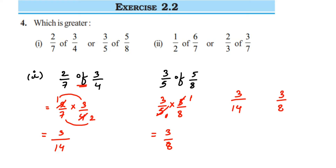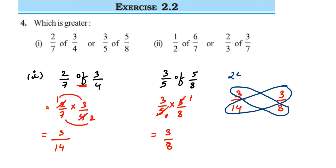I'm going to multiply 3 and 8, and also multiply 14 and 3. So 3 × 8 = 24, and 14 × 3 = 42. Now we check which number is greater: 42 or 24. 42 is greater, which means 3/8 is greater.